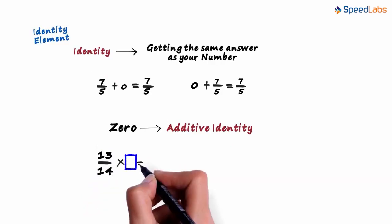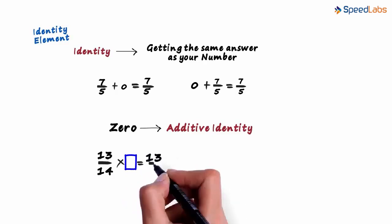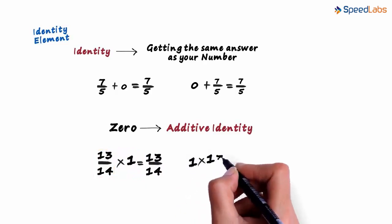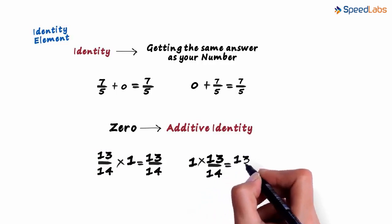What number do you multiply it with to get 13/14? Yes, the answer is 1. 13/14 multiplied by 1 gives us 13/14, the original number. And 1 multiplied by 13/14 also equals 13/14.